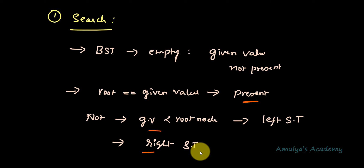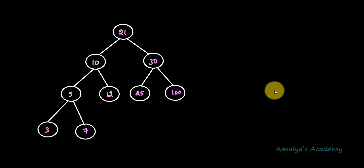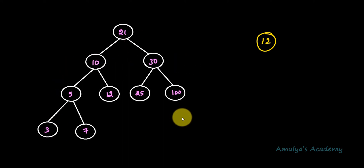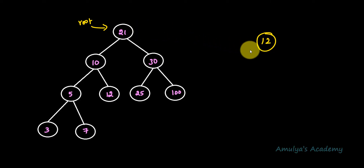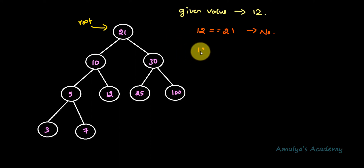Let's take an example. Here we have a binary search tree with key values on all the nodes. If I want to search for 12 in this binary search tree, the first step is to check whether the binary search tree is empty or not — it is not empty, so we compare the given value 12 with the key of the root node. The root node key is 21. Is 21 equal to 12? No. So next, we check whether 12 is less than 21 to determine whether to search left or right.